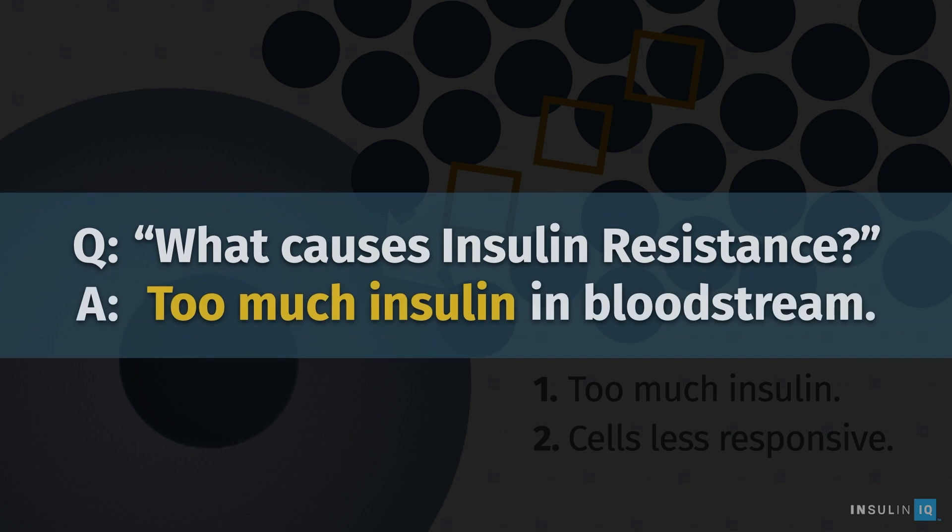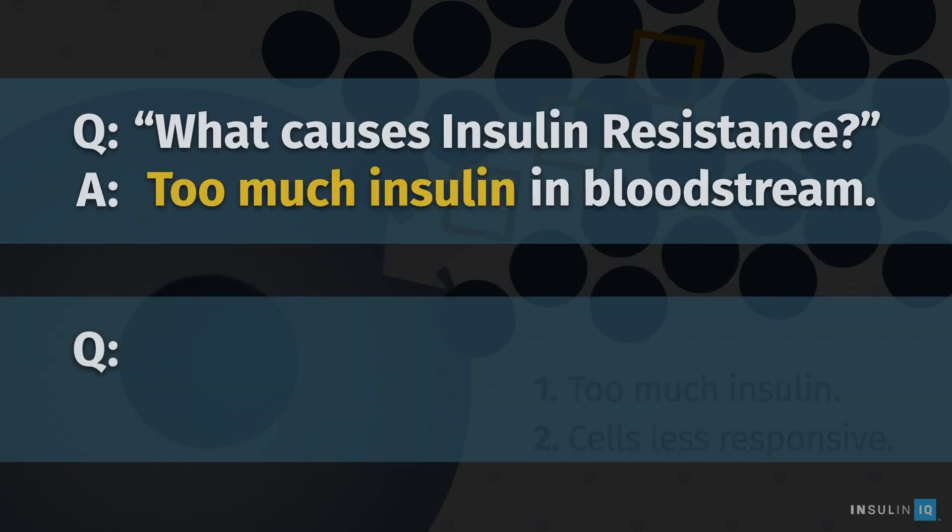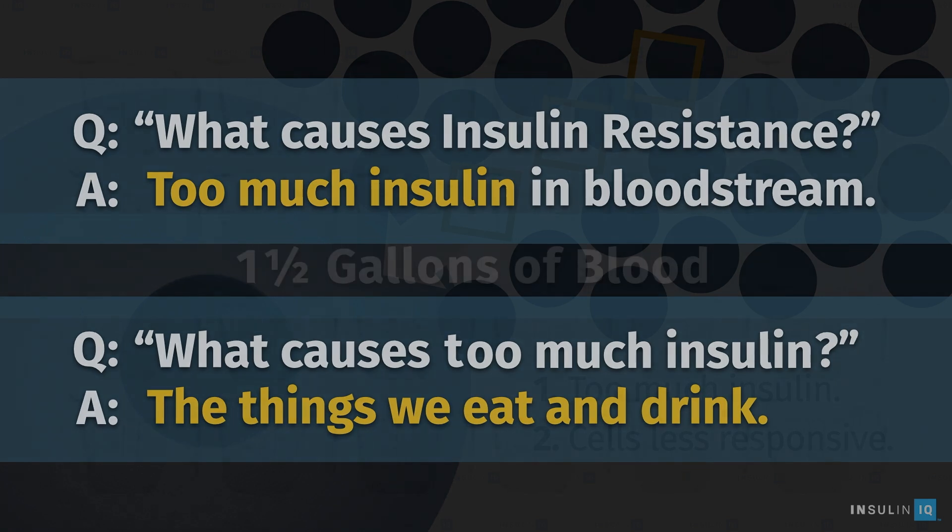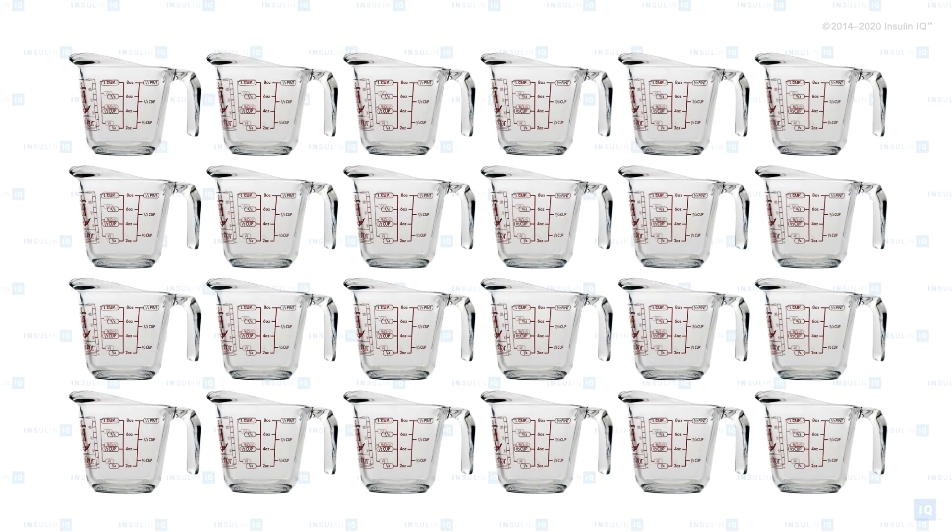The follow-up question then is, what causes too much insulin in your bloodstream? The answer is the things we eat and drink. Here's what happens: we have about one and a half gallons of blood flowing through our bodies at any given time, which is about 24 cups. And guess how much sugar all that blood is designed to handle at one time? About one teaspoon.